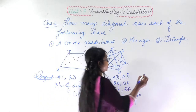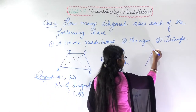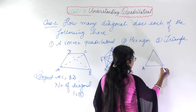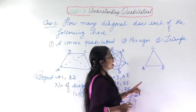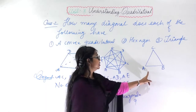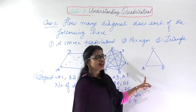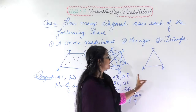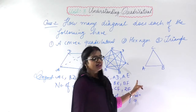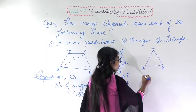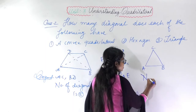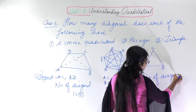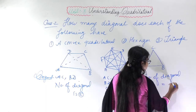Similarly, for a triangle ABC — the sides are AB, BC, and CA. Since all vertices are already connected by the sides, I cannot draw any additional diagonal. So the number of diagonals in a triangle is 0.